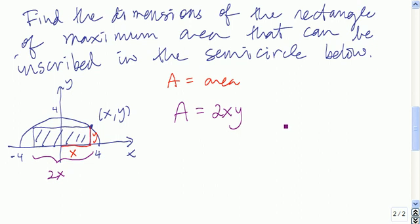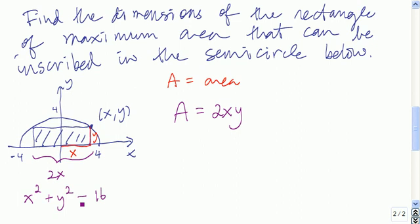Now we want to write down our constraint. The constraint comes from the fact that the upper right corner of the rectangle has to be on the semicircle. So we know that x squared plus y squared has to equal 16, because being on the semicircle means it's a point on the graph of the equation of the circle. Since we only have the upper half, we solve for y and find y equals the positive square root of 16 minus x squared.